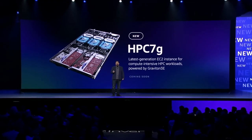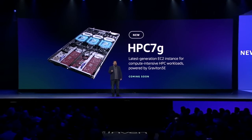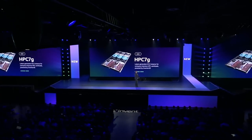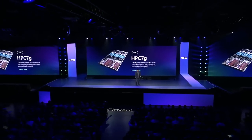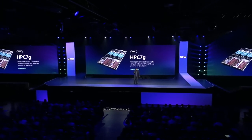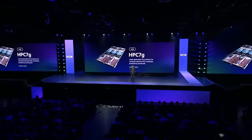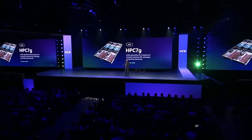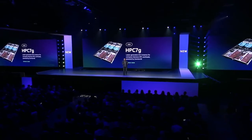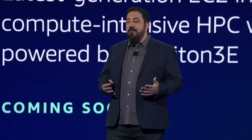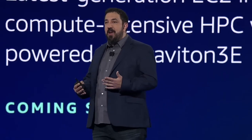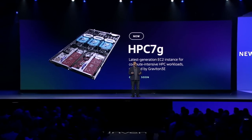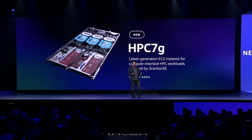Tonight we're pre-announcing the Amazon EC2 HPC 7G instance. The HPC 7G provides the networking capabilities of the Nitro V5 chip with the new Graviton 3E processor, offering even better price performance combined with leading energy efficiency for a host of real-world HPC applications.